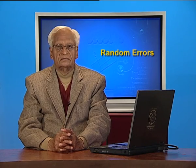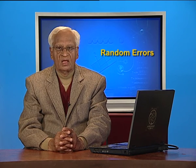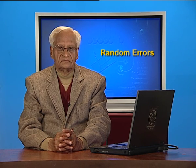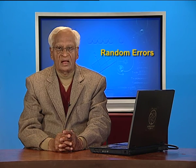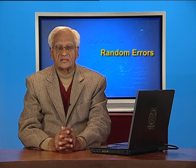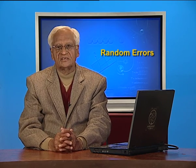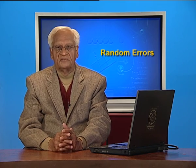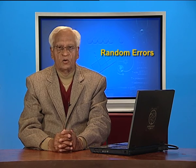In the last lecture, you would recall, we discussed two kinds of errors which creep into our observations. One type is called systematic errors. Systematic errors are caused by deficiencies in the measuring device, by defective design of the experiment, or by personal biases of the observer.